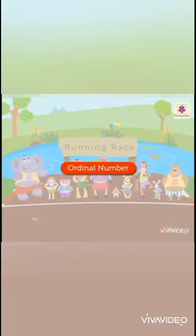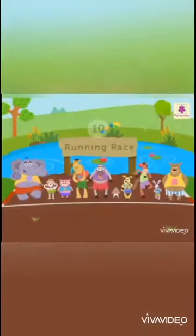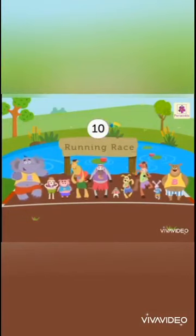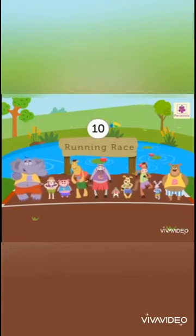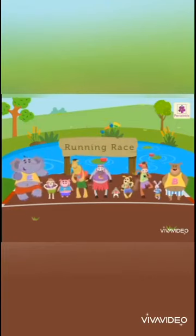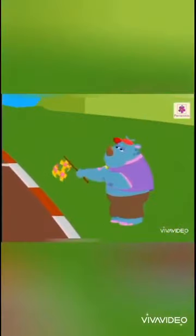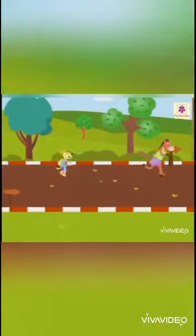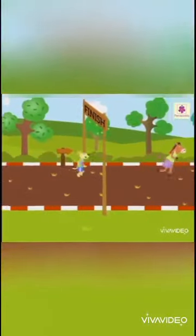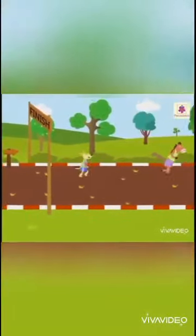Let us learn about ordinal numbers. There are ten animals living near this pond. They have organized a running race today. All of them are standing at the start position. The race begins! The horse and the dog are running very fast.